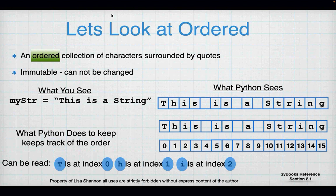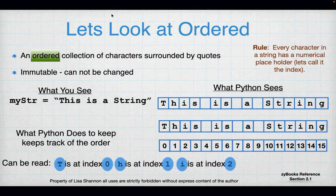When we go to pull individual characters out — we're going to talk about splitting and slicing — you have to remember that because you start at zero, the last character is always going to be one less than the length. Every character in a string has a numerical placeholder, and I will use the word index for that numerical placeholder.